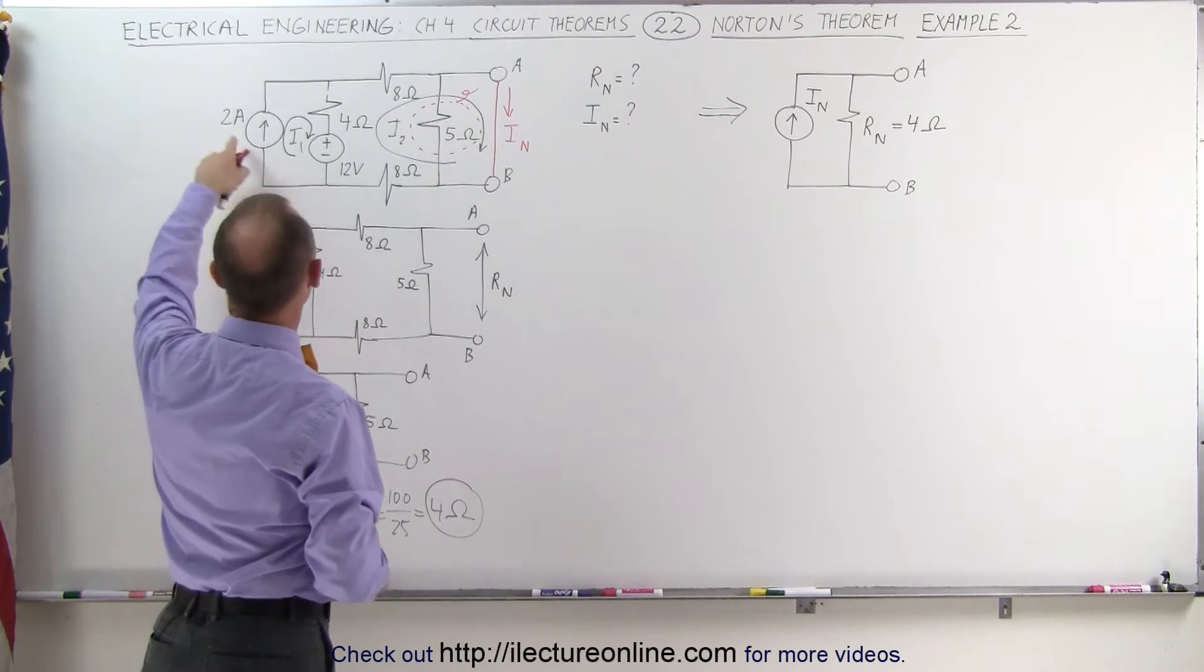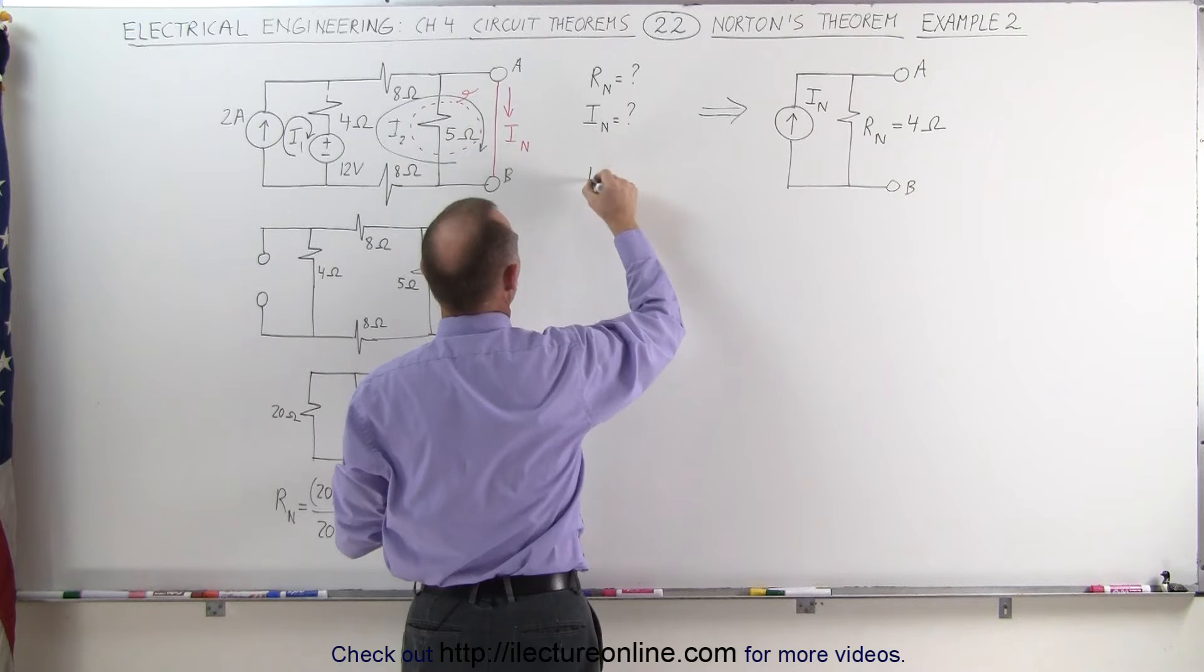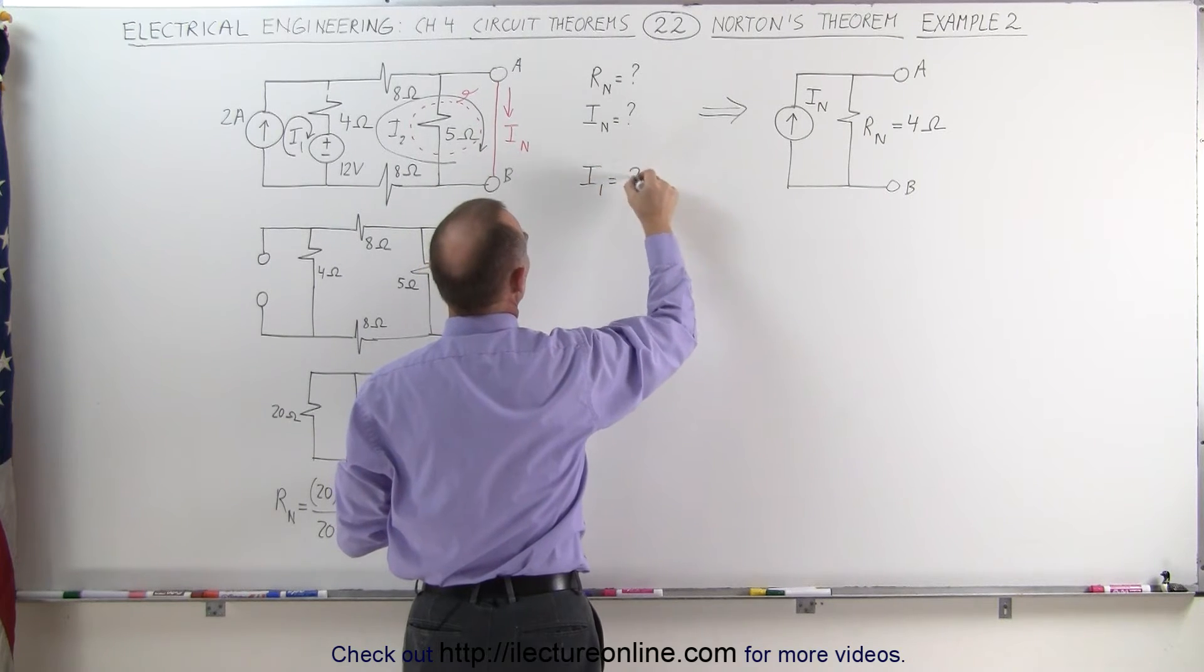We can also say that I1 must be equal to 2 amps. Because there's a current source there. I1 is equal to 2 amps.